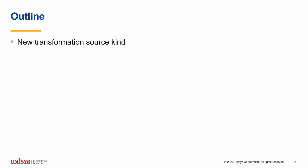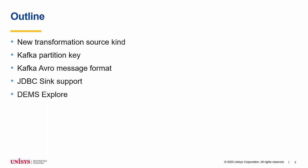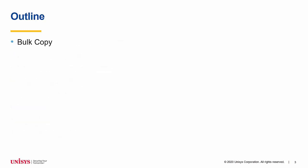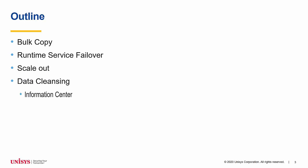In this new product information transfer we will introduce our new transformation source kind. We will touch on the Kafka partition key, discuss Kafka Avro message format and JDBC sync support. We will take a look at the new Explore page in the Data Exchange Management Studio. We will explain the new concept of streams, see how to migrate previous transformation runs, take you through some of the main administration site changes, discuss the changes to bulk copy, introduce a runtime service failover functionality, explain the scale out feature, discuss the data cleansing policy settings, and cover the information center improvements.